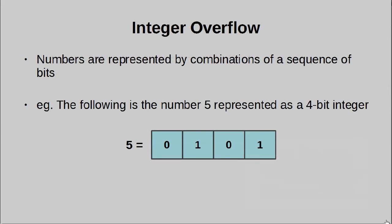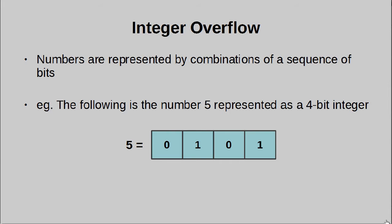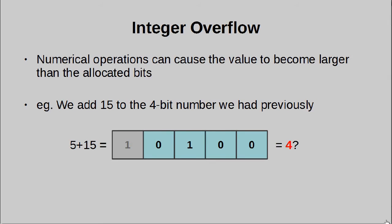Next is integer overflow. We've talked about this on several occasions, but the idea is numbers are represented as combinations of a finite sequence of bits. If we can make the number so large that we overrun the maximum value it can hold, the number basically resets. A malicious user could take advantage of this to make systems behave in undesirable ways.